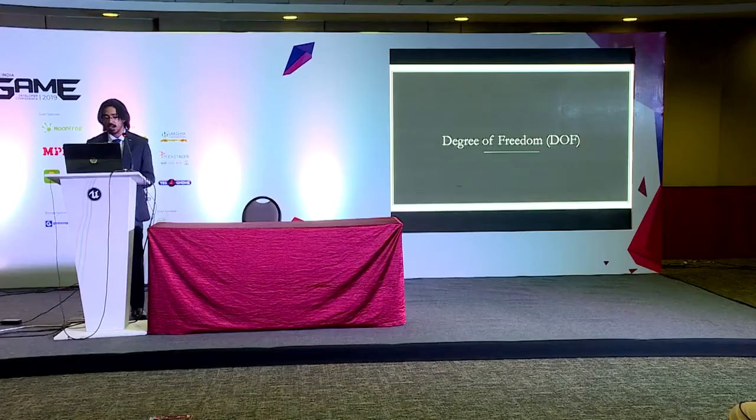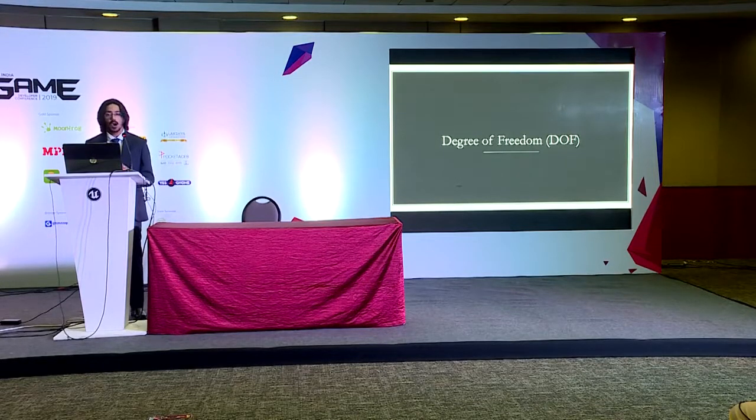One thing I missed earlier is degree of freedom. The Oculus Rift initially came with six degrees of freedom, abbreviated as 6DOF. I would like to explain what DOF means. Degree of freedom means how a rigid body can move in a 3D environment, on a three-dimensional space. There are two main types: three DOF and six DOF.